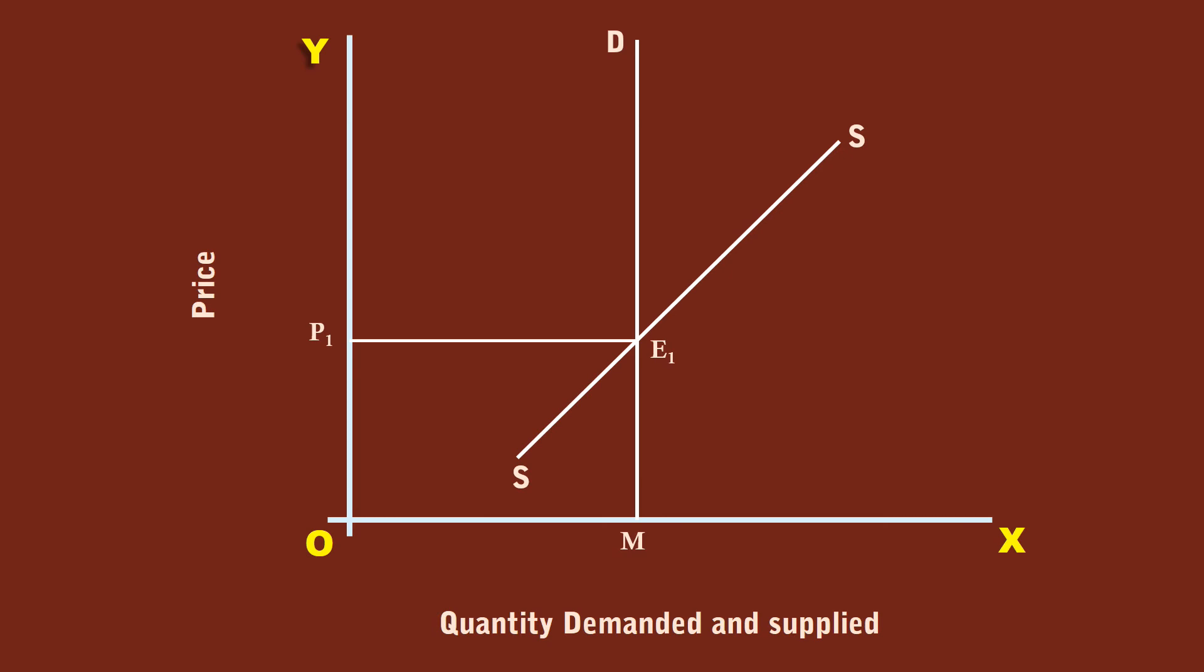After a fall in supply, the new supply curve S0 S0 is formed to the left of SS. The immediate effect is there is a deficiency in supply to the extent of E0 E1. The sellers are willing to sell only E0 units at price P1, but the consumers want to consume E1 units. The competition among buyers pushes up the price along the demand curve MD.